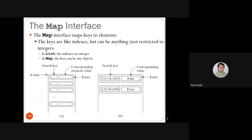A map interface is basically like a dictionary — you have a key-value structure, similar to an index, where keys map to associated values.